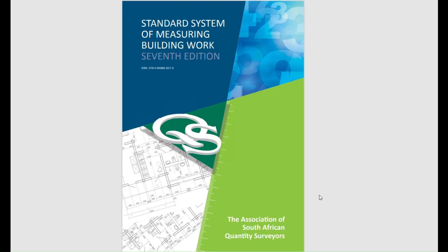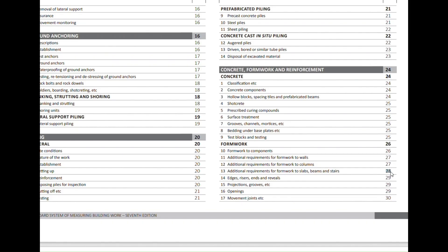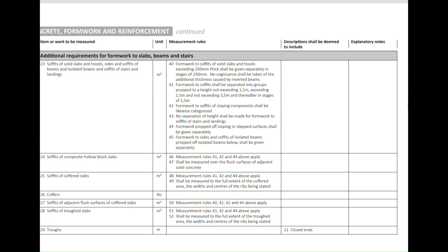As with all my exercises, I will be using the standard system of measuring building work as a guide to taking off quantities for this section of the work. In today's video, we are going to be referencing page 24 and page 28, which covers additional requirements for formwork to slabs, beams, and stairs. By now you should be familiar with page 24, so we'll go straight to page 28, which talks about the additional requirements for formwork to slabs, beams, and stairs.